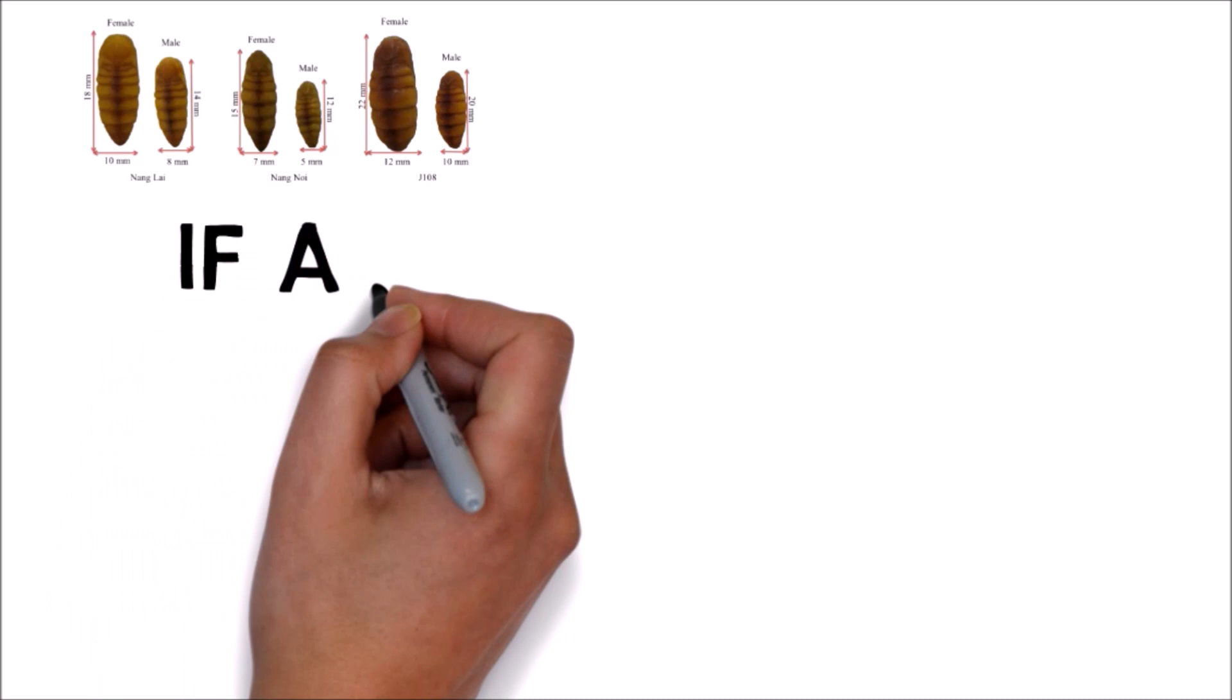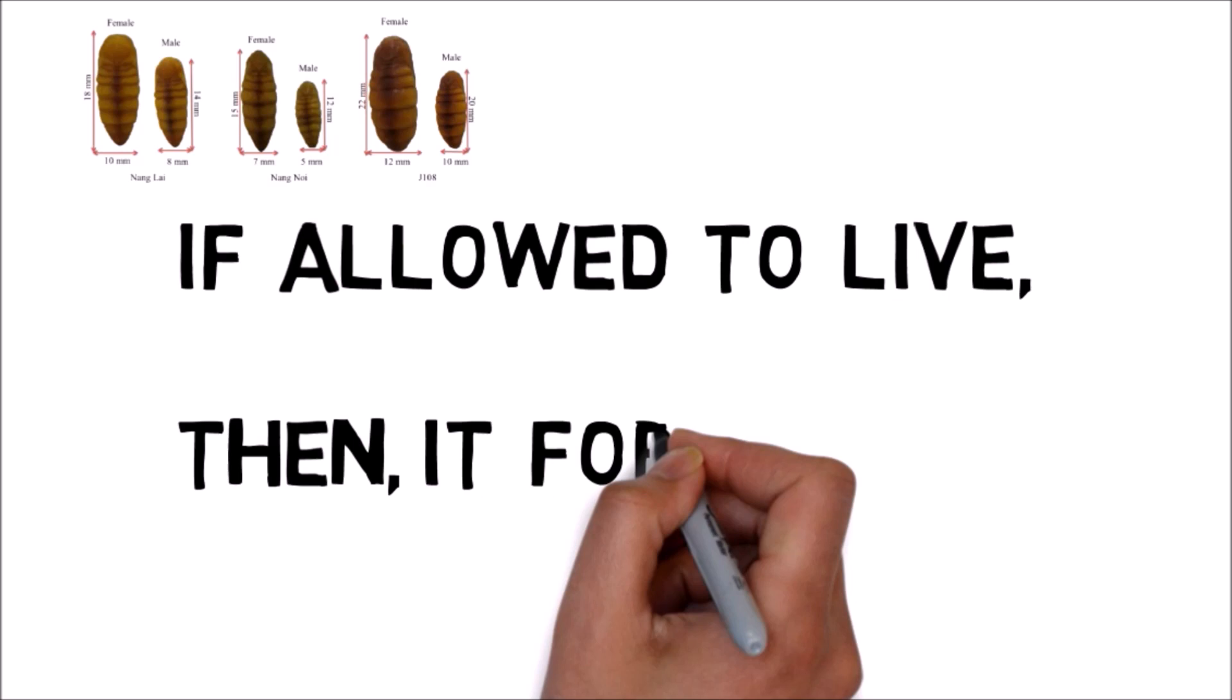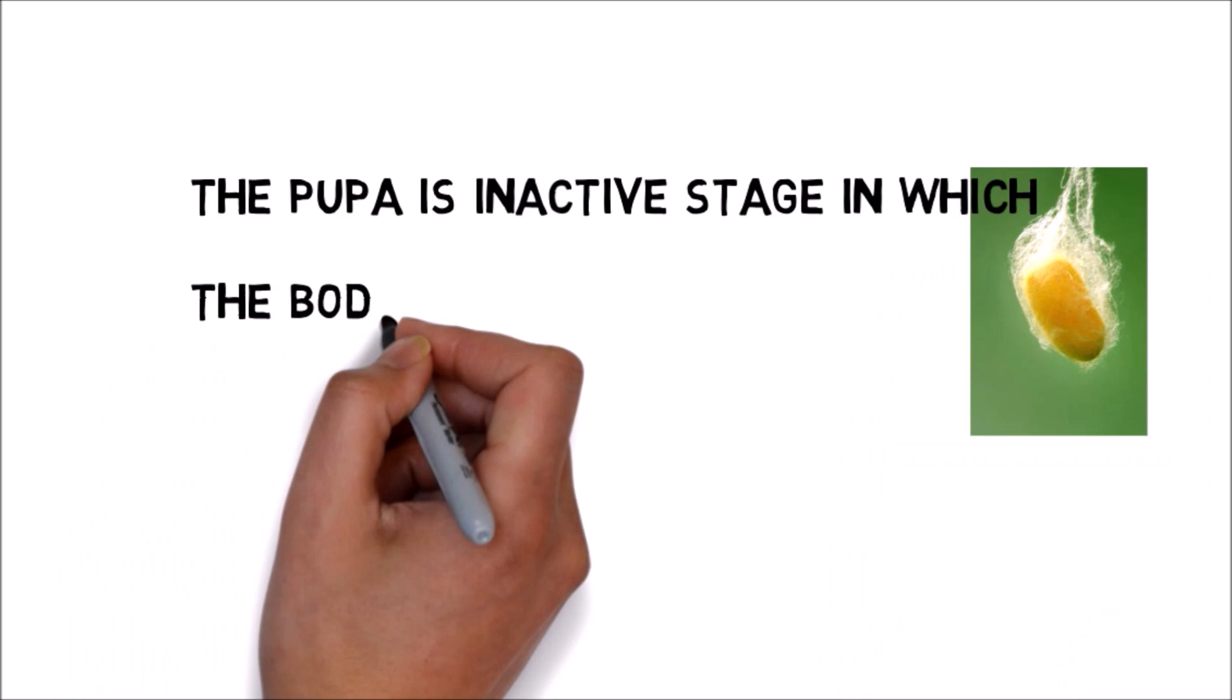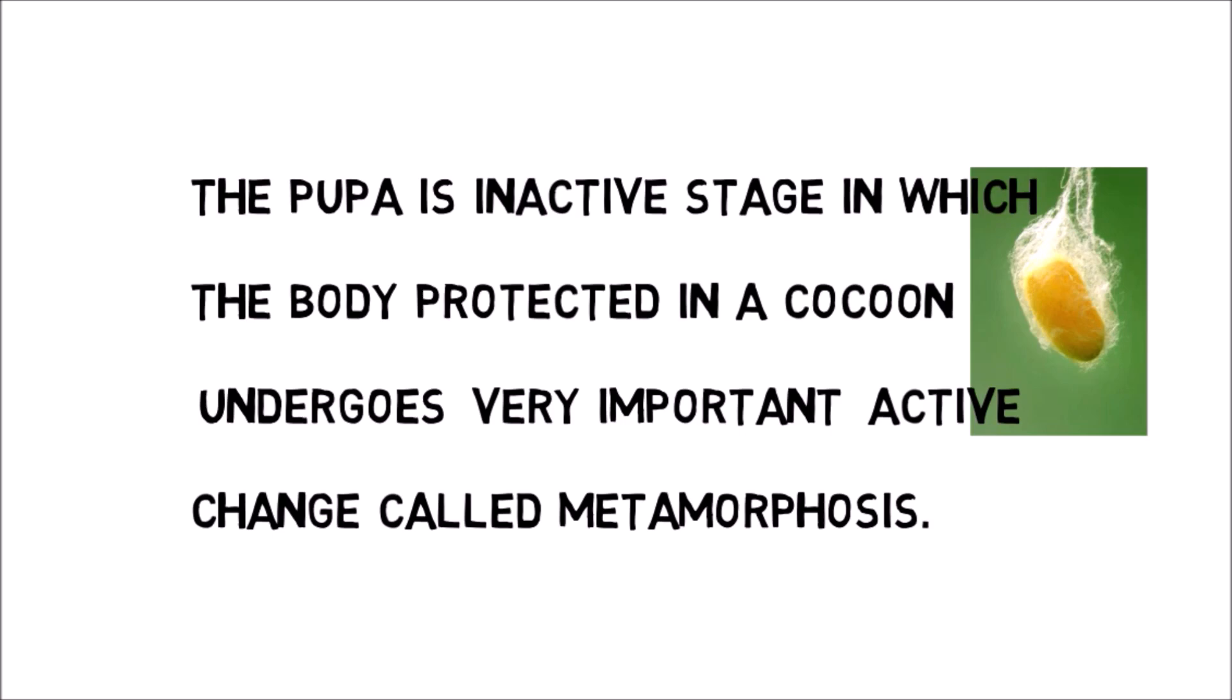If the cocoons are allowed to live, then the stage is known as pupa. It is the most passive stage in the life cycle of silkworm. It is the most inactive stage in which the body is covered inside a case. The body protected in cocoon undergoes an important change called metamorphosis.